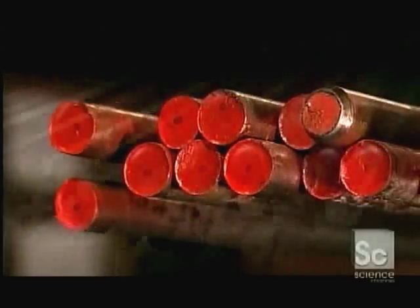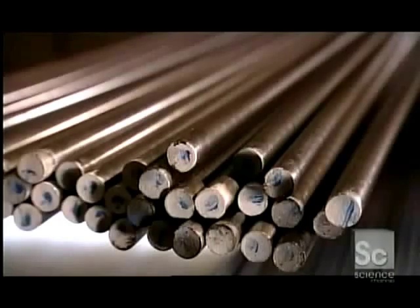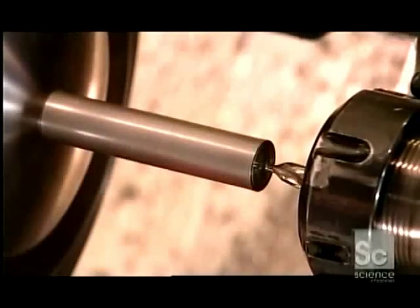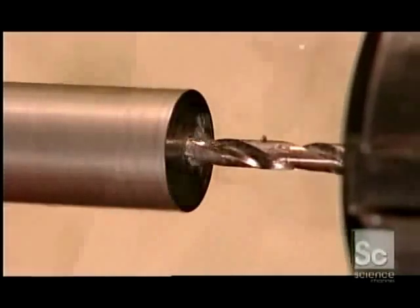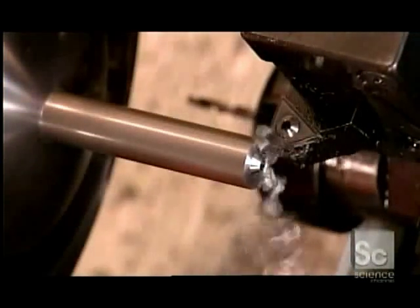Countersinks and plug cutters start out as steel bars. To make a countersink, this computer-guided tooling machine uses what's called a center drill to pierce a starting hole, then switches to its main drill, which bores right through.